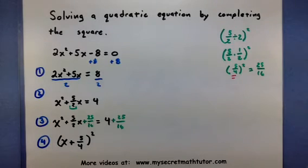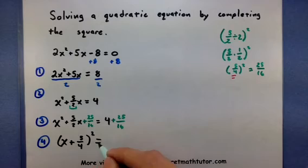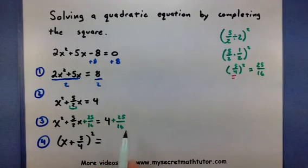And sure enough, if we were to foil this out and actually square it, we would end up with x squared plus 5 halves x plus 25 over 16. So that's quite a bit of work. Almost done, but now I have to combine the right side as well.